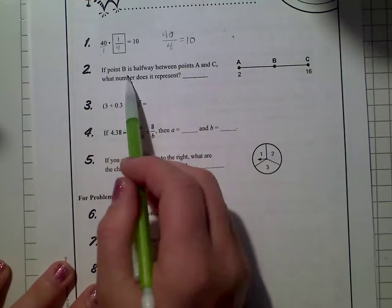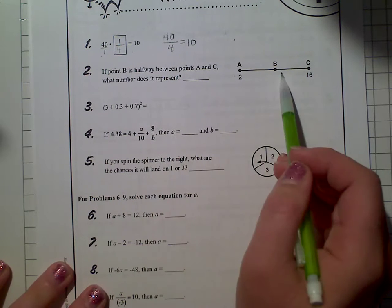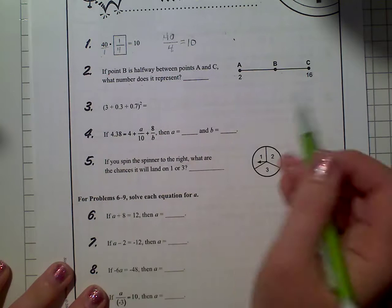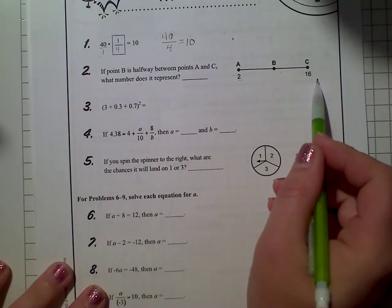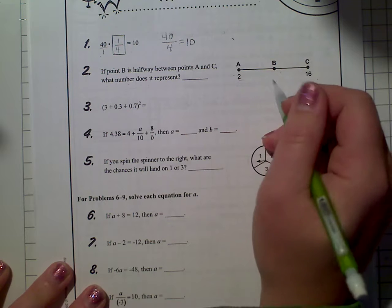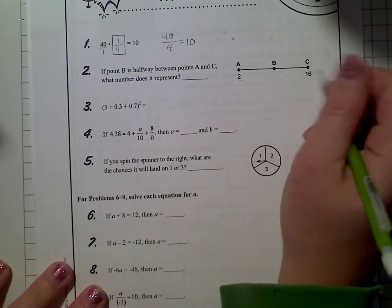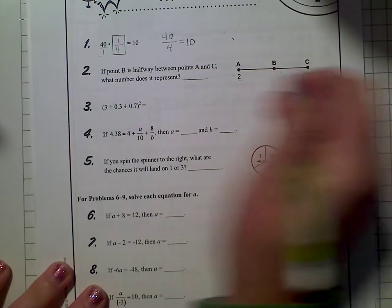If point B is halfway between points A and C, what number does it represent? So if this is 2 and this is 16, what's halfway between 2 and 16? I'm giving you a time to think because it's 2 divided by 16, which would get you to 8.